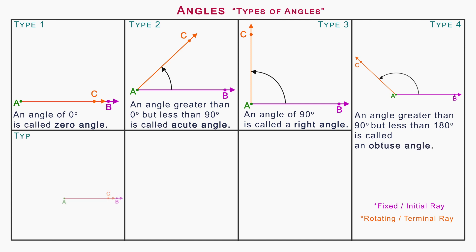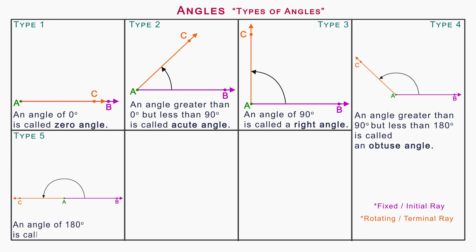Type 5: Straight angle. On rotating the terminal ray in anti-clockwise direction as shown on the screen, the angle formed is called a straight angle. An angle of 180 degrees is called a straight angle.